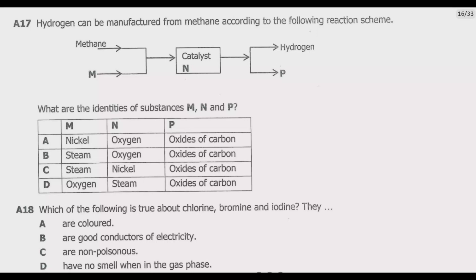Question A17 reads: hydrogen can be manufactured from methane according to the following reaction scheme. We have methane, then M, then catalyst N, then hydrogen, then P. What are the identities of substances M, N and P?